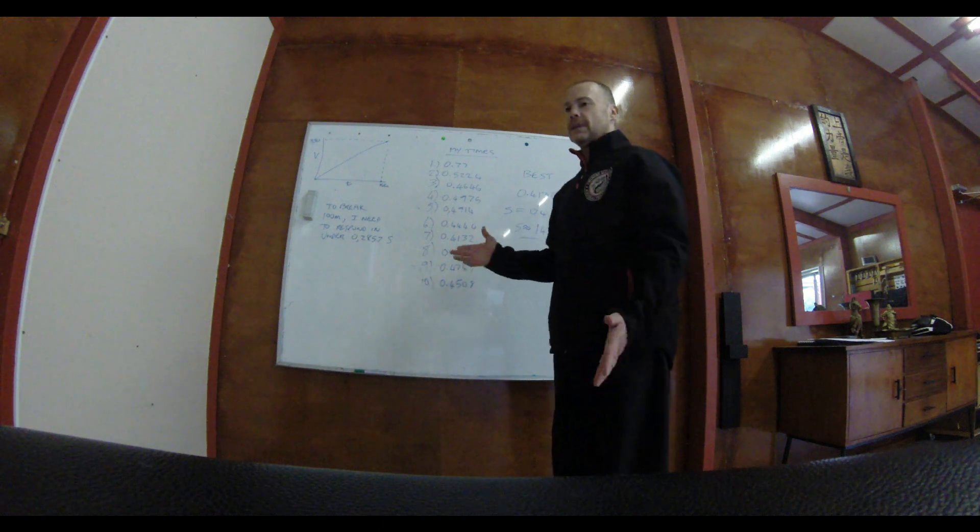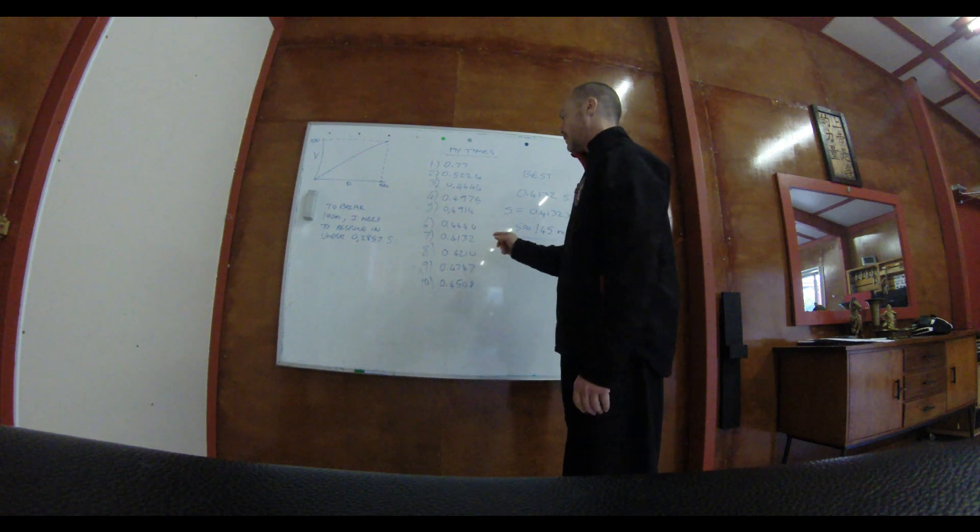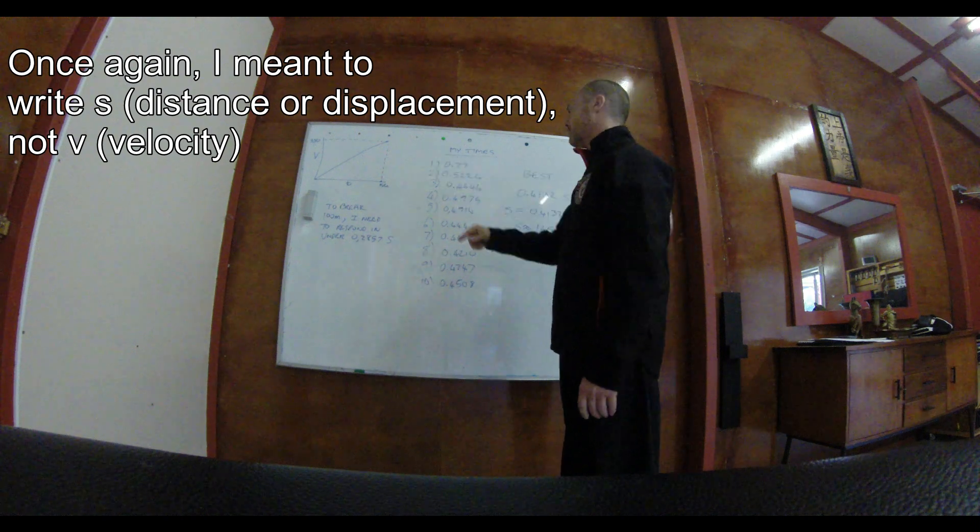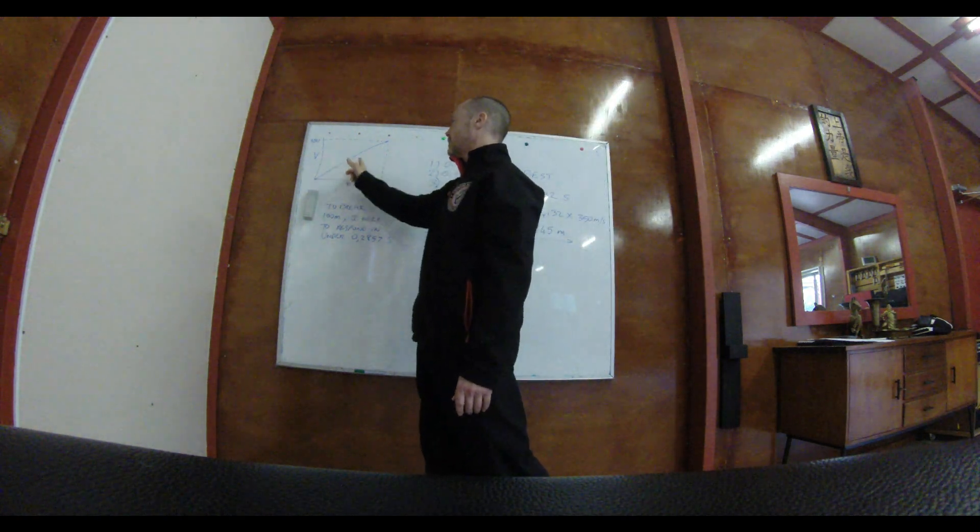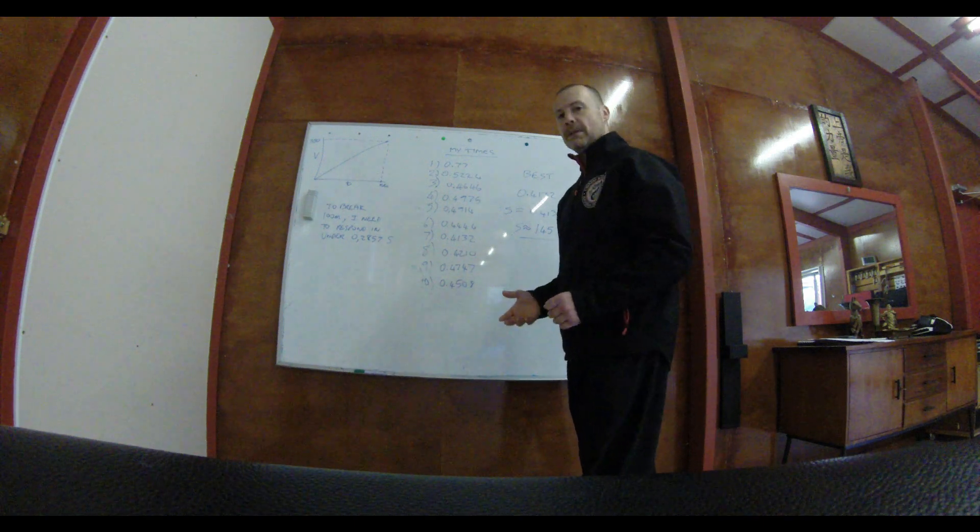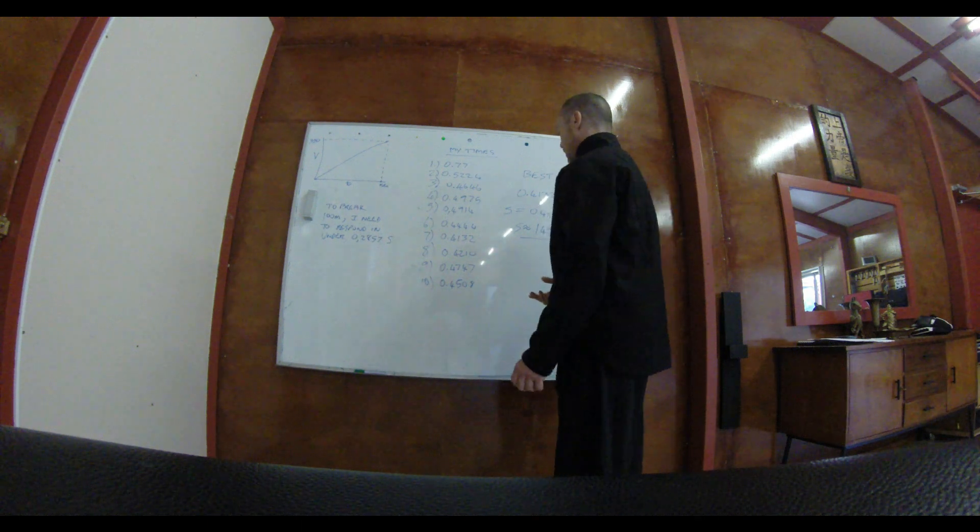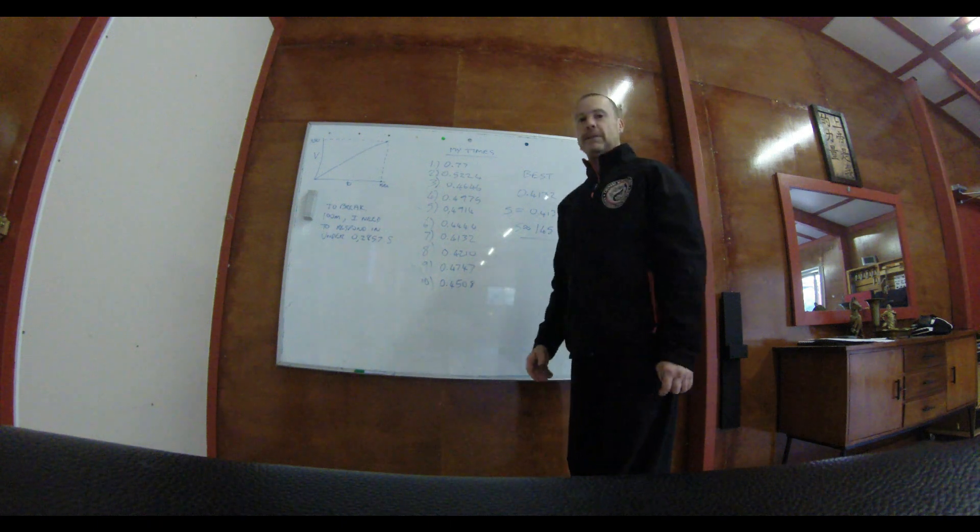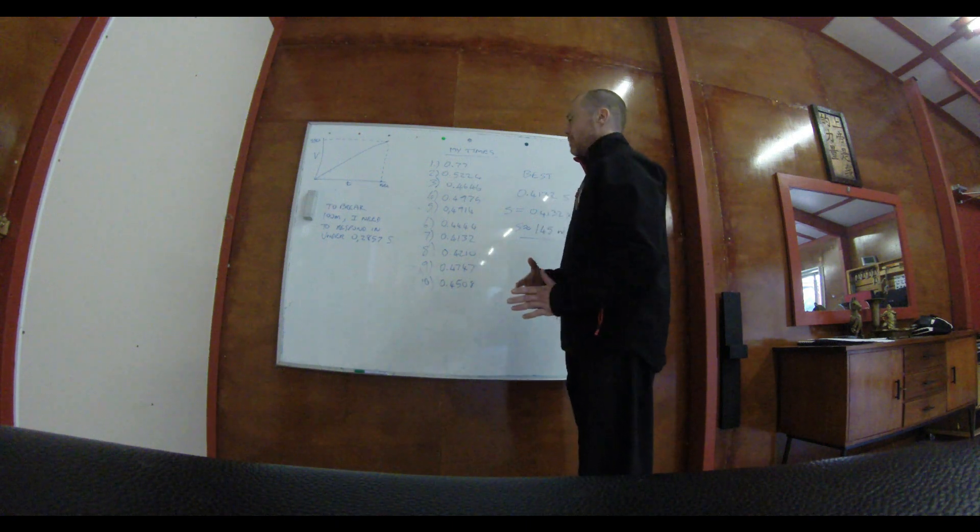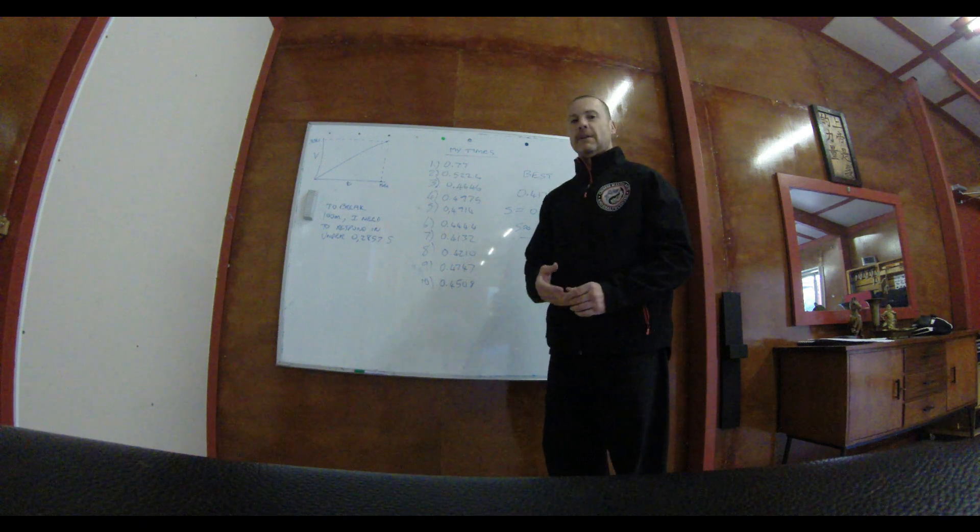So taking my best value, I've decided not to use the average, but just to use the best value just for interest's sake. My best value is 0.4132 seconds to respond. And if we plug that into this graph, we roughly end up somewhere just under the halfway mark. And that gives us the range at which I would be able to effectively dodge 9mm bullets traveling at 350m per second. I'd be able to dodge that within 145m. So I'd need to be a minimum of 145m away, which is quite a big value. I believe with time, I can probably bring that down either close to 100 or break under 100. And that would become a lot more interesting.